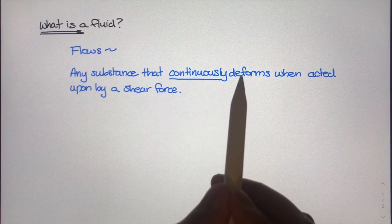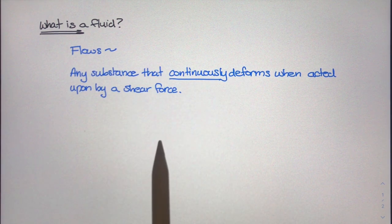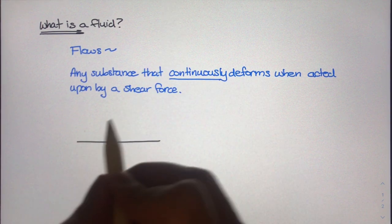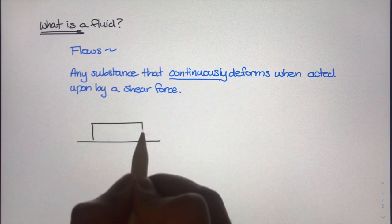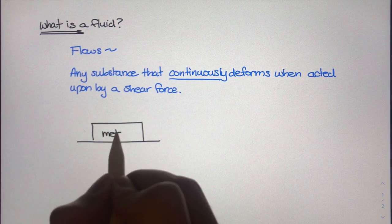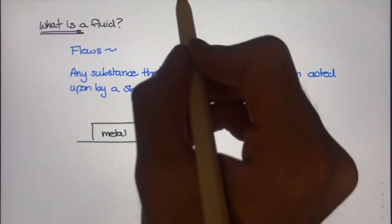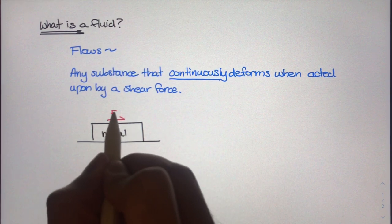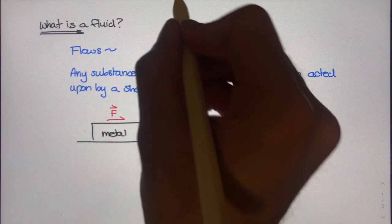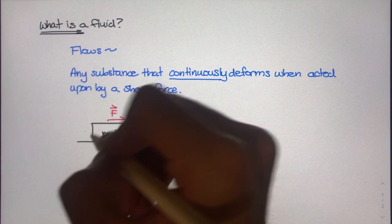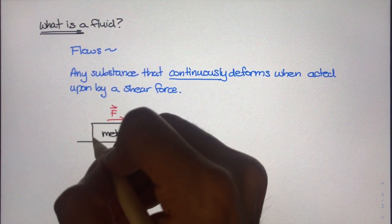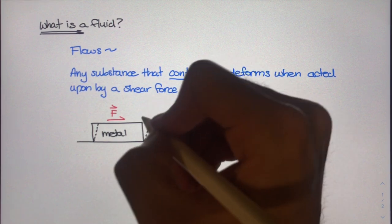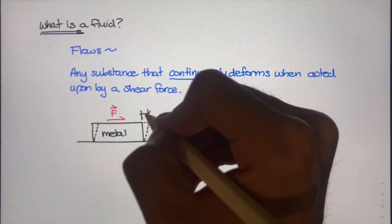And to really understand this, I think the best way to look at this is through a couple examples. So say we have a big metal block sitting on the ground. And to this block, if we applied some type of external shear force to the block, what do you think would happen? Well, the block would deform a little bit in the direction of the given force, by some amount delta x.